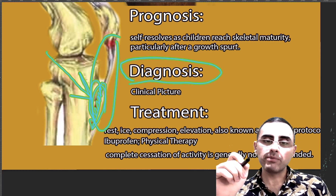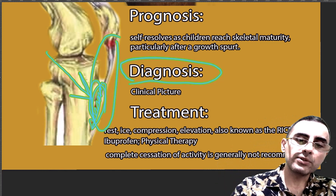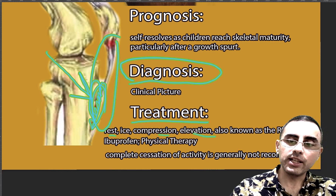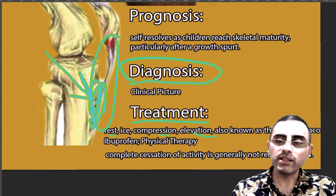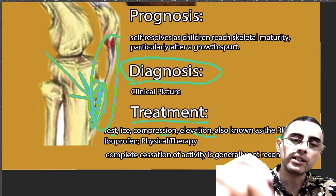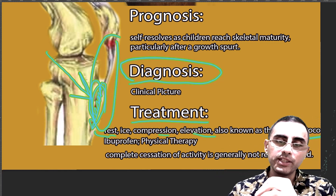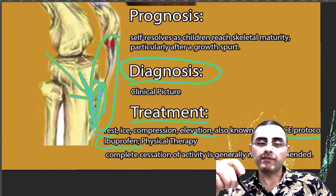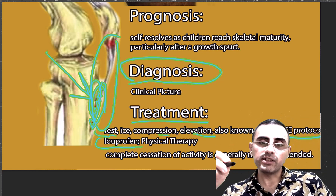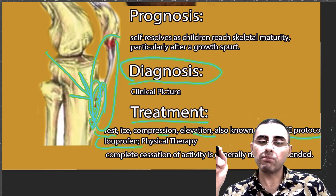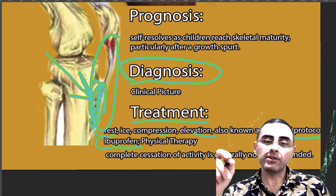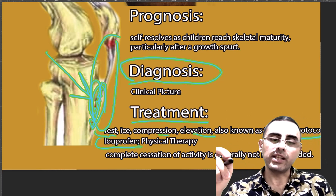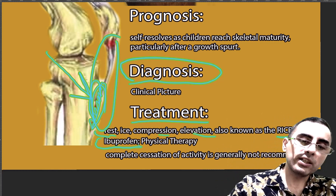Because it's an extremely common disease, treatment is conservative. Rest, ice, compression, and elevation — also known as the RICE protocol — is usually enough. Ibuprofen is sometimes prescribed for pain and inflammation. Other non-steroidal anti-inflammatory drugs are also possible, such as aspirin or naproxen, but ibuprofen is usually enough.